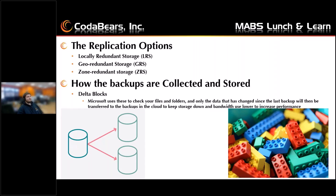MABS uses what are called Delta blocks, and this is how Microsoft determines what data needs to be backed up to minimize bandwidth and increase performance overall. The Delta blocks will take backups of only the files in the location that you select that have changed — any files that have had updates or data transfers. Those are what the Delta blocks are looking for and what will be sent to the cloud from your server, rather than taking the entire folder every time a backup runs.